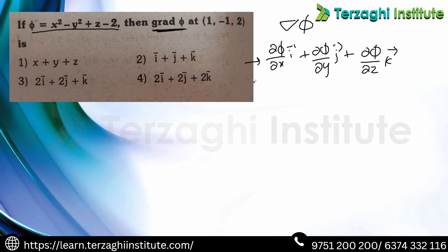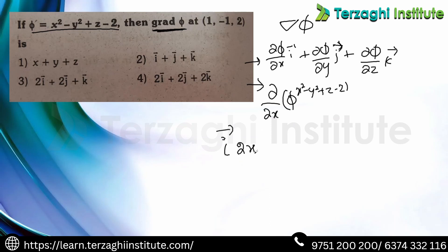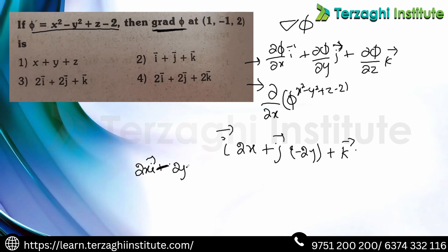Given φ = x² + y² + z. Differentiate with respect to x — i vector: 2x. Differentiate with respect to y — j vector: −2y. Differentiate with respect to z — k vector: 1. So ∇φ = 2x·i + (−2y)·j + k.